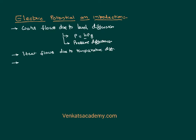Therefore, parameters like water flow and heat flow occur because of another parameter — pressure difference as well as temperature difference. Similarly, if there are two bodies connected with a contact wire, on what basis does charge flow? Between the two bodies, charge flows because of a term called potential difference. Like pressure difference and temperature difference, in electricity we have a term called potential difference. So before knowing the potential difference, let us try to understand what is the meaning of potential itself.